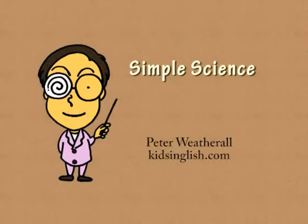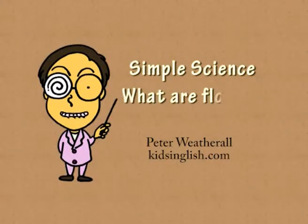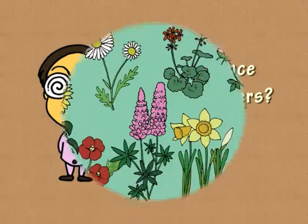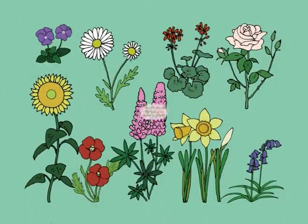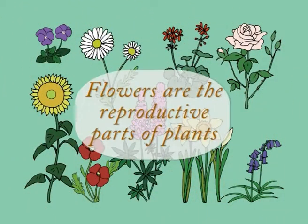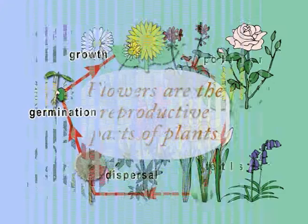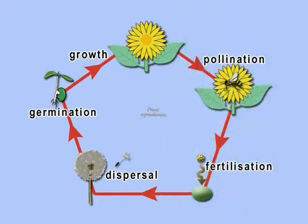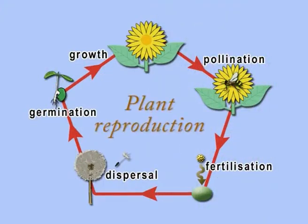Simple Science: What are flowers? Flowers are the reproductive parts of plants. Reproduction is the process by which plants produce seeds, which grow into new plants.